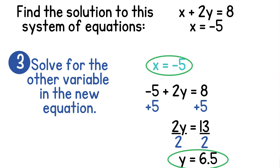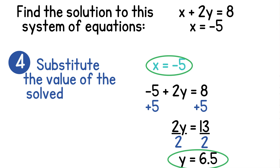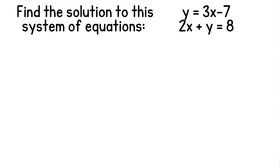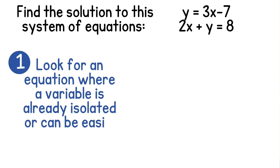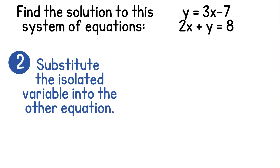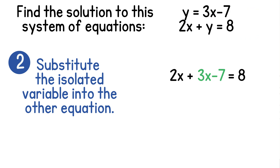This system was kind of lucky though because one of our equations was already solved. If our second equation wasn't already solved like x equals negative 5, then we would do step 4, where we substitute the value of our solved variable into the first equation. So let's look at an example when we have to do the fourth step. We'll solve this system where y equals 3x minus 7 and 2x plus y equals 8. Our first step is to decide what equation has the variable already isolated. We see that the first equation has y isolated, so we'll substitute y, which equals 3x minus 7, into the other equation, replacing y with 3x minus 7.